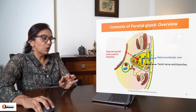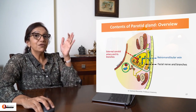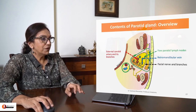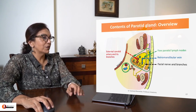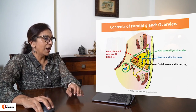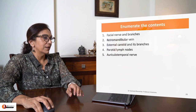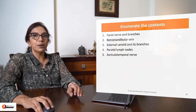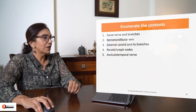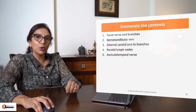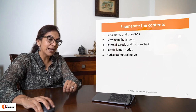It also contains the retromandibular vein just deep to the facial nerve, the external carotid artery further deep to that, a few parotid lymph nodes, and the auriculotemporal nerve. These are the five contents of the parotid gland.